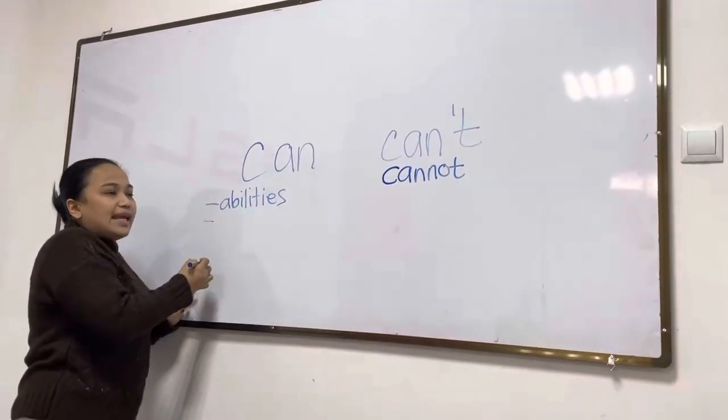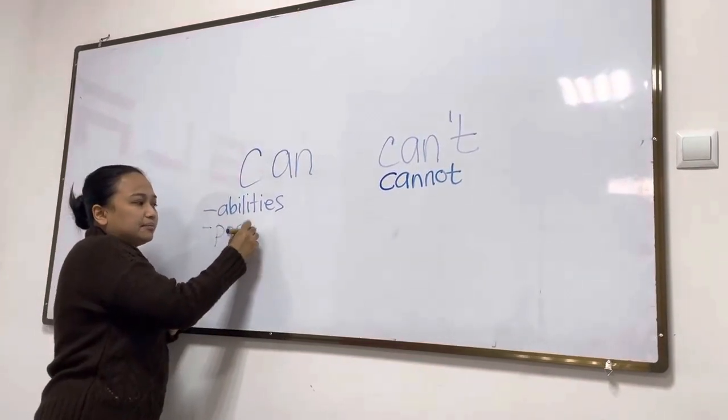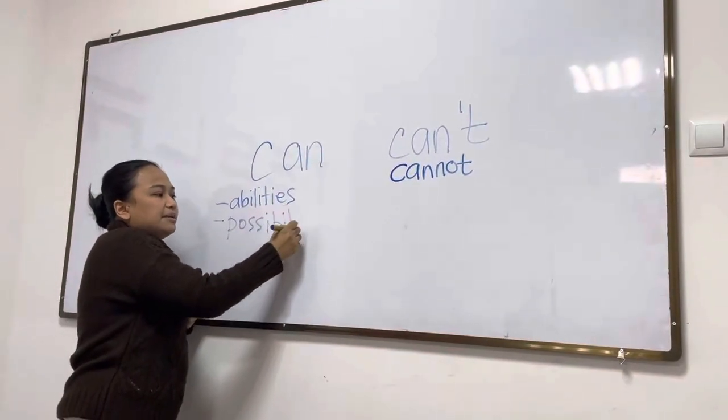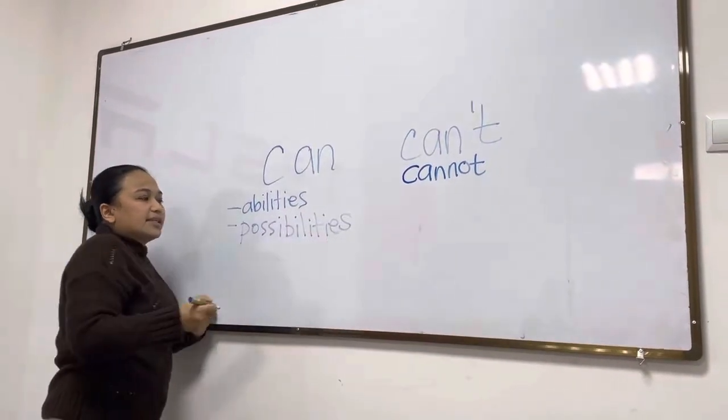We also use can for possibilities. What is possibilities? Vasmojnas, example.